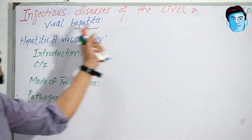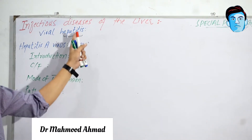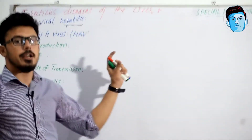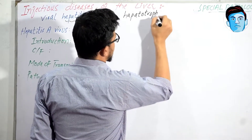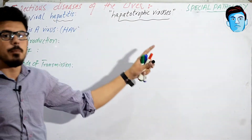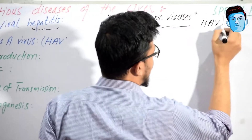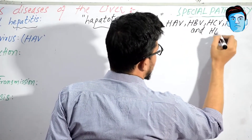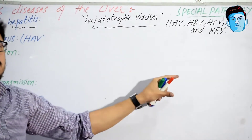Let's talk about the infectious diseases of the liver — viral hepatitis. Hepatitis is a general term meaning inflammation of the liver. Certain viruses are responsible for causing infection in the liver exclusively and are called hepatotrophic viruses. These are a group of viruses with specific affinity toward the liver, and include hepatitis A, B, C, D, and E viruses.